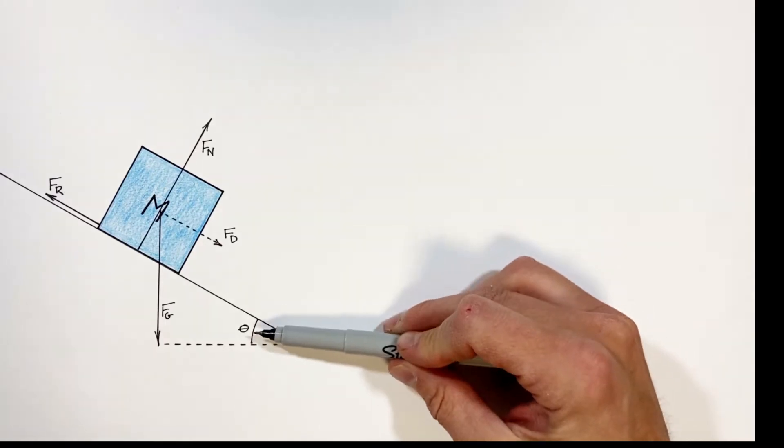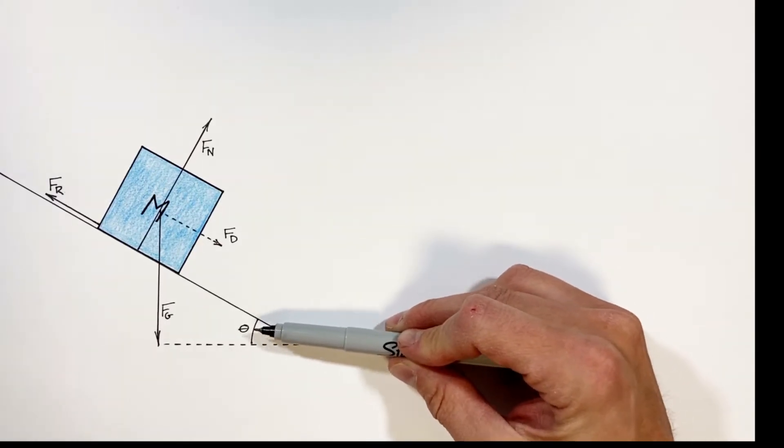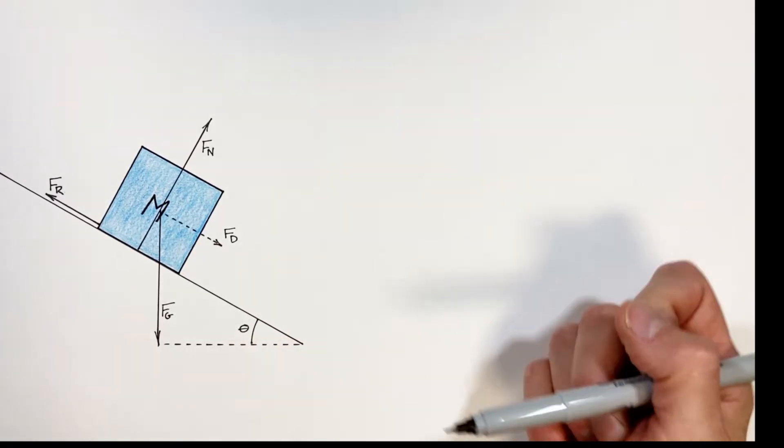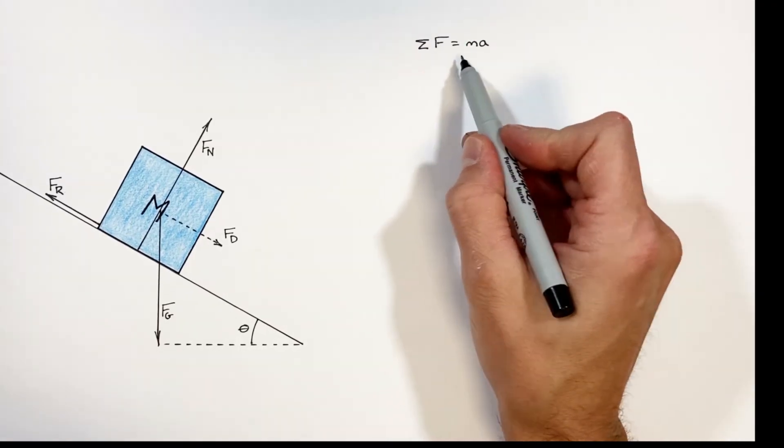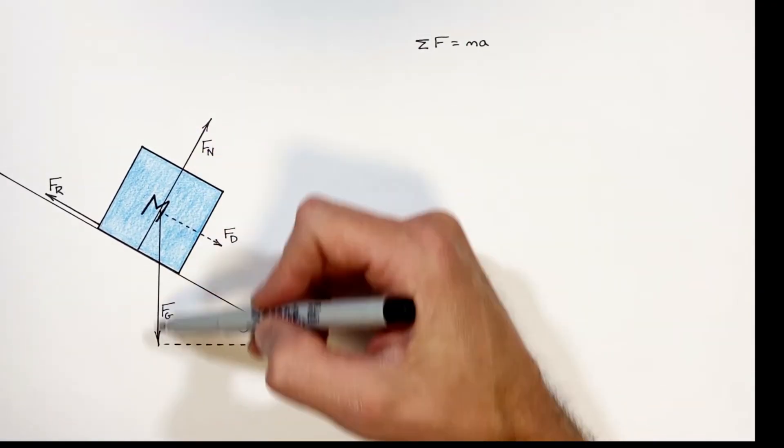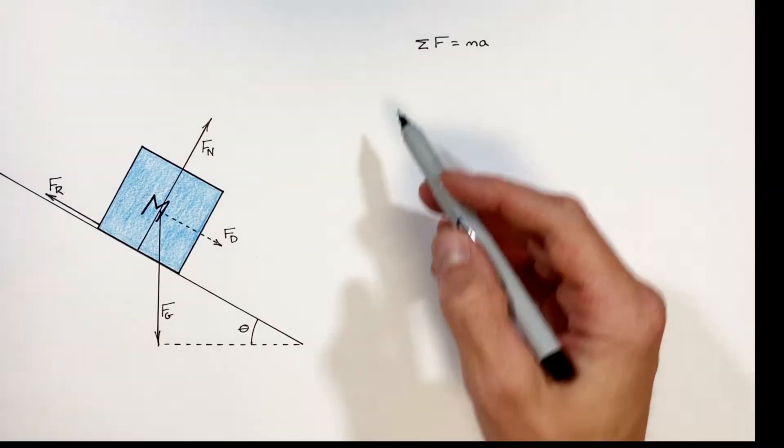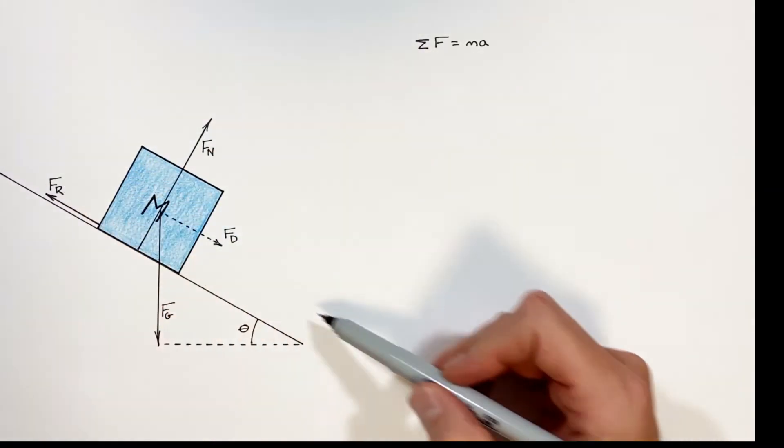Now in order to determine the critical angle at which this block is going to slide, we need to take a look at Newton's second law. And what I want to do is look at Newton's second law not within the y-axis or the x-axis, but I want to look at Newton's second law within the plane of the hill.